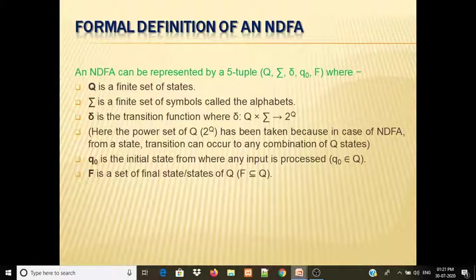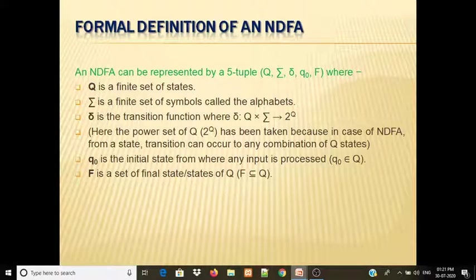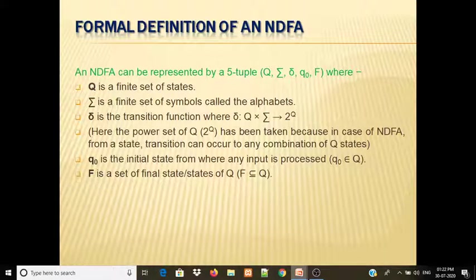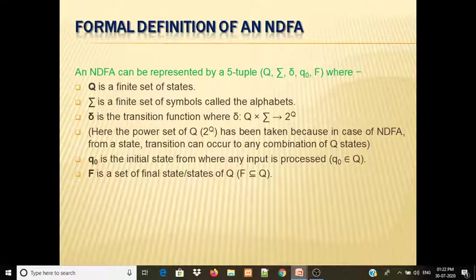The power set of Q — that is, 2 to the power Q — is used because in the case of NDFA, from a state, transition can occur to any combination of Q states. Q0 is your initial state, from which input is processed, and Q0 belongs to Q.